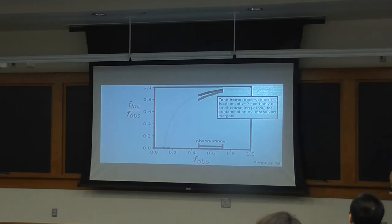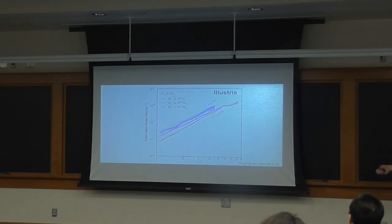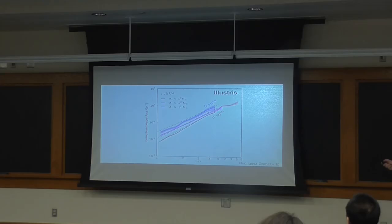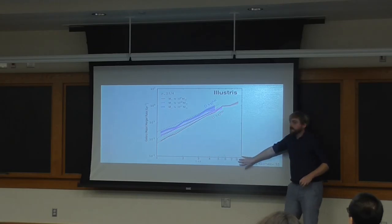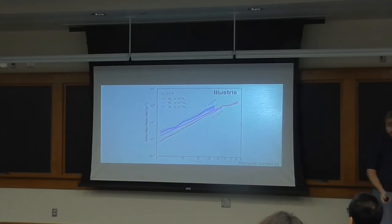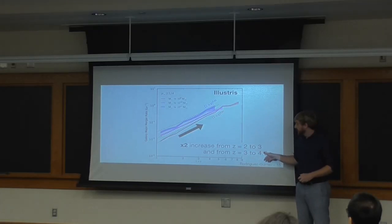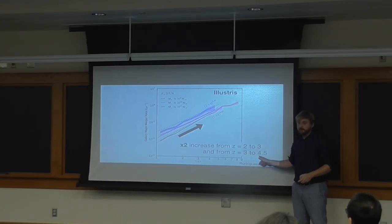The sky is not falling at redshift 2 for this problem — that's the takeaway. But the sky is likely falling when we try to push measurements to higher redshift. The galaxy major merger rate derived from IllustrisTNG is increasing with increasing lookback time — there's a factor of two increase from redshift 2 to 3 alone, and another factor of two from redshift 3 to 4.5.